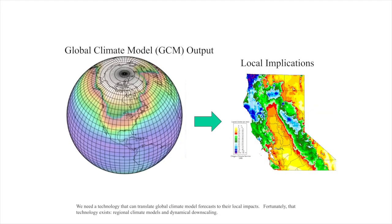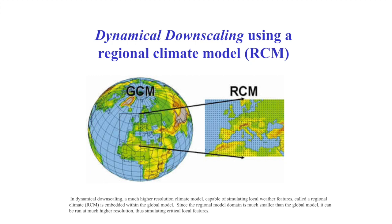How can society acquire regional climate predictions? We need a technology that can translate global climate model forecasts to their local impacts. Fortunately, such a technology exists: regional climate models and dynamical downscaling. In dynamical downscaling, a much higher resolution climate model capable of simulating local weather features — called a regional climate model — is embedded within the global model. Since the regional model domain is much smaller, it can be run at much higher resolution, thus simulating and forecasting critical local features.